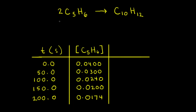Let's look at an example of a second order reaction. C5H6 is cyclopentadiene, and two molecules of cyclopentadiene will react with each other to form dicyclopentadiene. Our goal is to use the data from this data table to prove that this reaction is second order. However, we have to be careful because in our balanced equation, we have a two as a coefficient in front of cyclopentadiene.